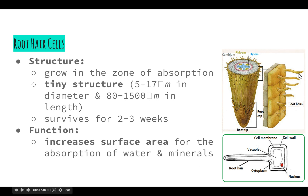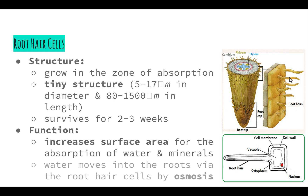By increasing the surface area of the roots, we're increasing the available space for osmosis to take place — for water to move into the roots, as well as other minerals that come from the soil. Water moves into the roots via the root hair cells by the process of osmosis. Our root hairs are made up of a semi-permeable membrane, which ties in with our osmosis definition.